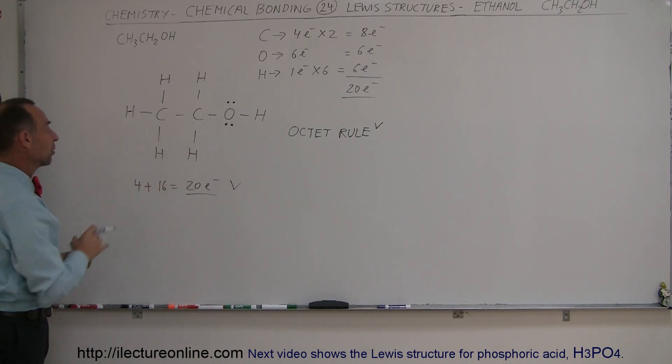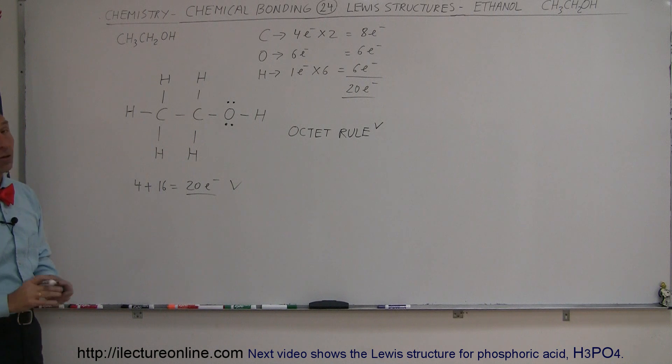We follow the octet rule, we follow the number of electrons, and there's no violation in the bonding or anything like that. So it looks like this is the Lewis structure of ethanol. A little bit different, but at least another very good example of how to make Lewis structures using your standard rules.